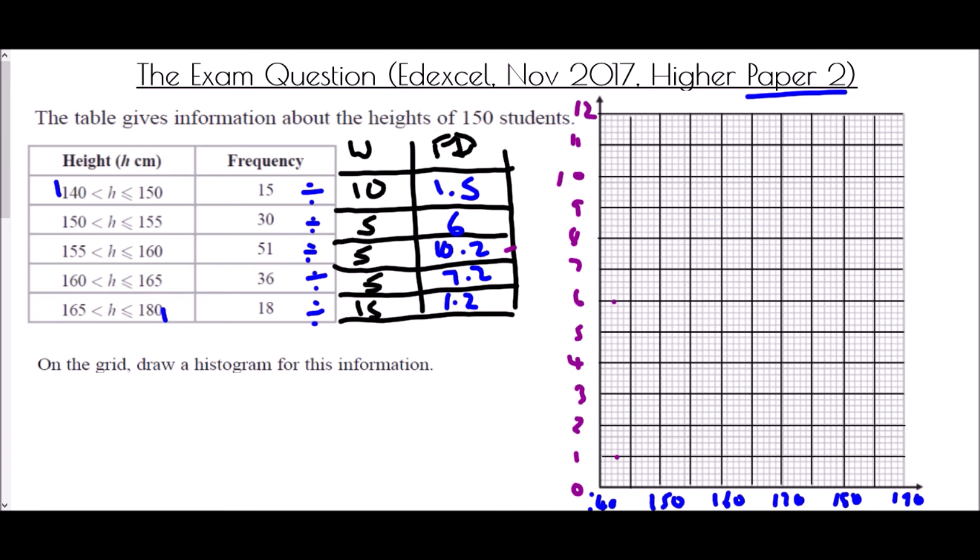And so then come the bars. We are going to draw each of them. The first one from 140 to 150 has a frequency density of 1.5. Next from 150 to 155, well that is a height of 6, so we begin straight away at 6, but this one is only one square wide. Then 155 to 160, well that is the value of 10.2, so that would be 10 and one little square. And we keep going from 160 to 165, that is 7.2, so 7 with one little square above it. And then from 165 all the way to 180, which is three squares across, that has a height of 1.2.